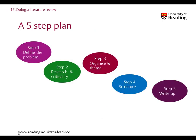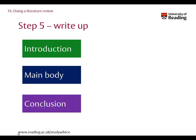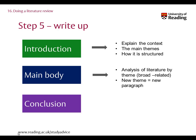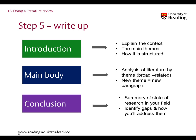Step 5: Write-up. As with all good writing, you need a structure to your literature review. This will include an introduction, main body and conclusion. Your introduction should explain the broad context of your research area, the main topics that you've chosen to investigate and an idea of how you've structured your review. The main body should be an analysis of the literature, theme by theme, showing how your research builds from what has come before — starting with the broader themes, moving through to those more directly related to your study. Your conclusion should summarise the state of research in your field, identify gaps in the knowledge and show how your investigation is going to address these gaps.